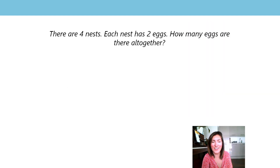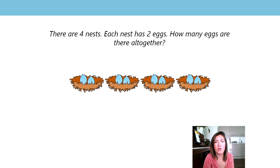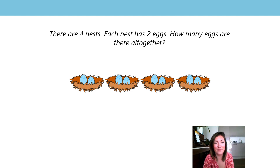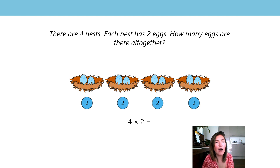I've got a two times table problem for you today. There are four nests. Each nest has two eggs. How many eggs are there altogether? When we think about the different ways we might want to solve this problem, we might want to draw it out — four nests with two eggs each. We might also use our twos counters to represent it, where one counter represents two eggs. We could also write a multiplication expression: four times two equals. How might we find the product? Pause the video and have a think.